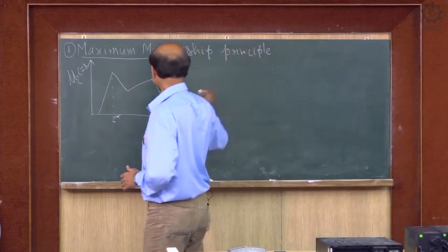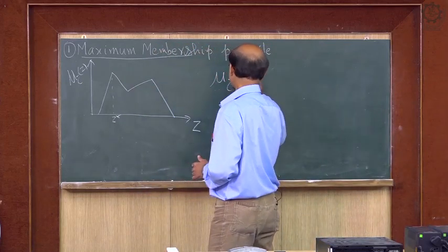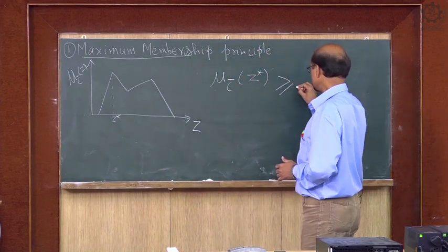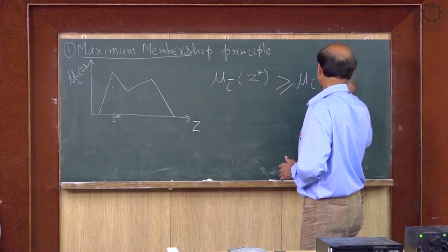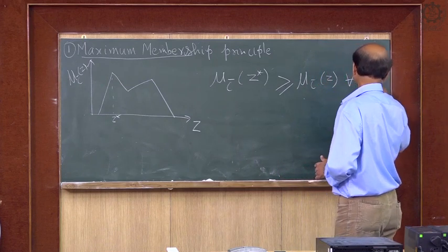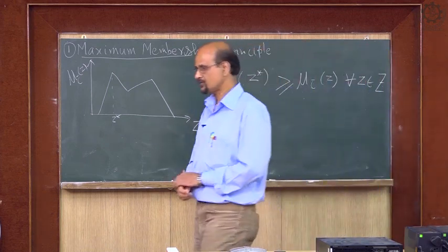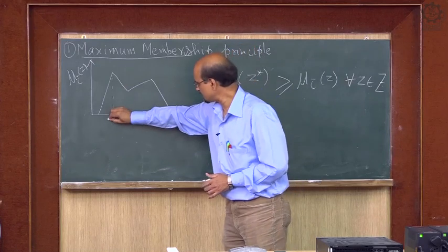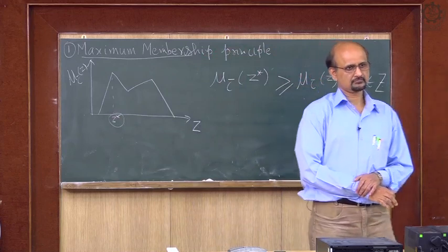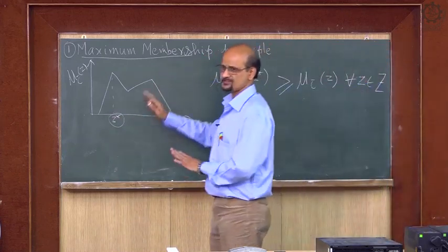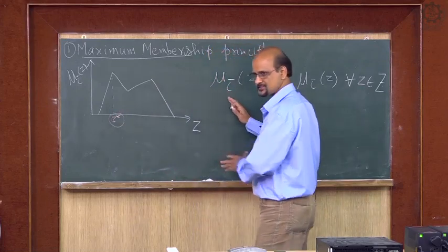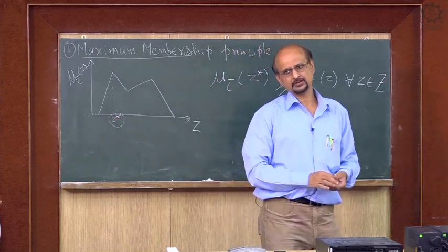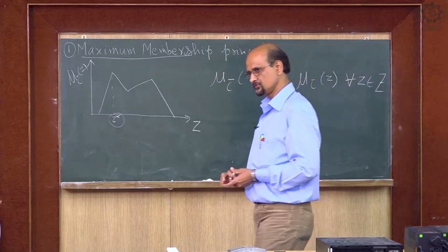We can write this as: mu_c_bar(z*) ≥ mu_c_bar(z) for all z belonging to capital Z. From fuzzy you are getting one single point z-star that is your defuzzified value by this method. Suppose I have three fuzzy sets and you combine them — whatever maximum is there, that point is your defuzzified value of the whole c-bar.